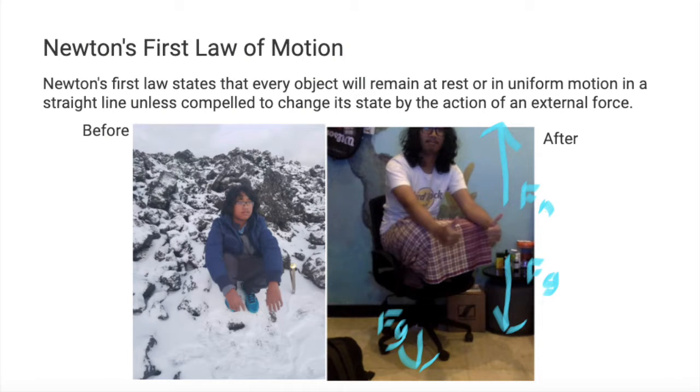This is one of the examples of Newton's first law which basically states that every object will remain at rest or in uniform motion in a straight line unless compelled to change its state by action of an external force. Or in short, it will not move if nothing is moving it.